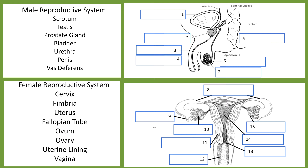Let's reveal the answers. For the male reproductive system: number one, the urinary bladder; number two, the prostate gland; then the penis; the urethra; vas deferens; the testis; and the scrotum.